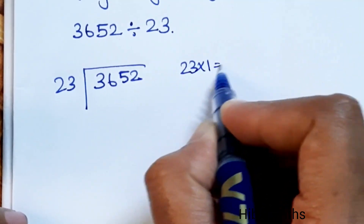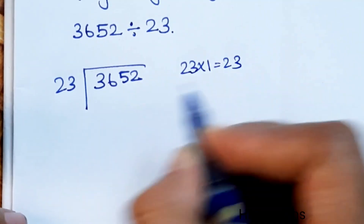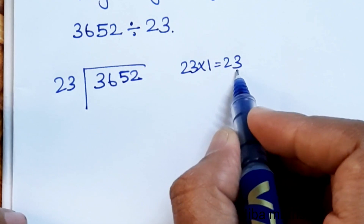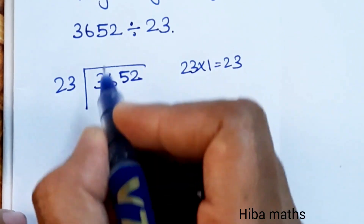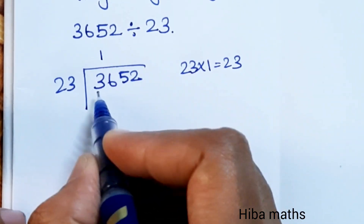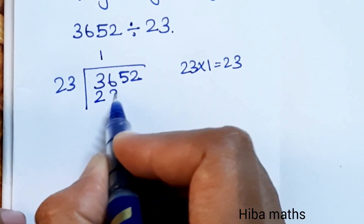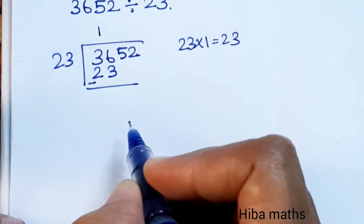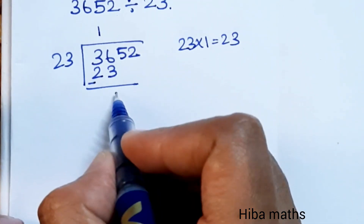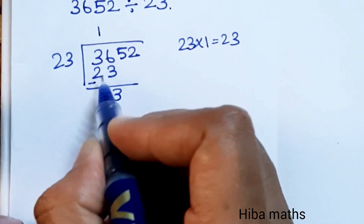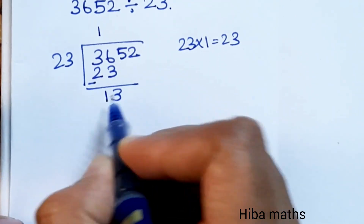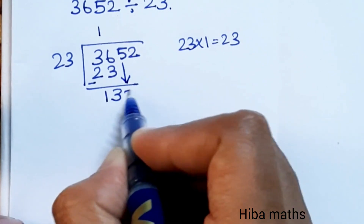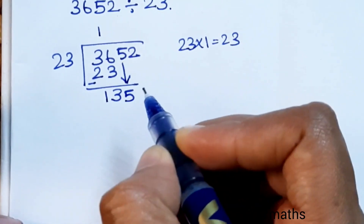23 goes into 36 one time. 1 times 23 is 23. 36 minus 23 is 13. Bring down the next number: 13 and 5 gives us 135.